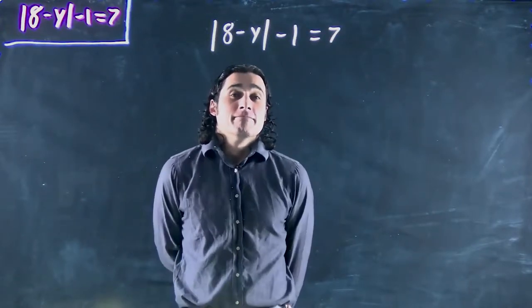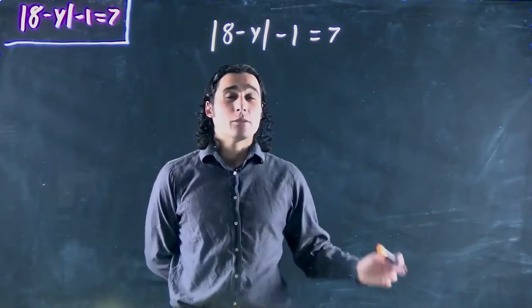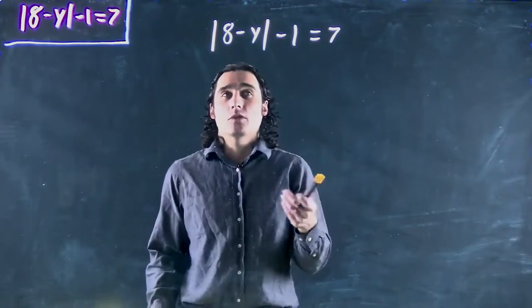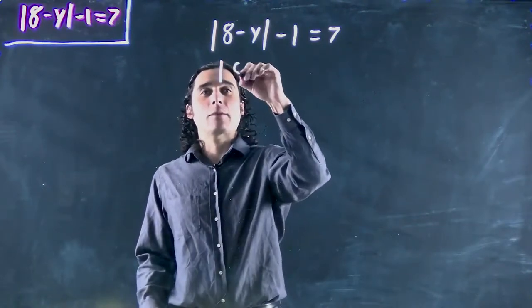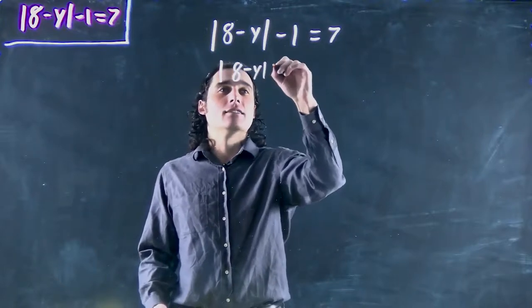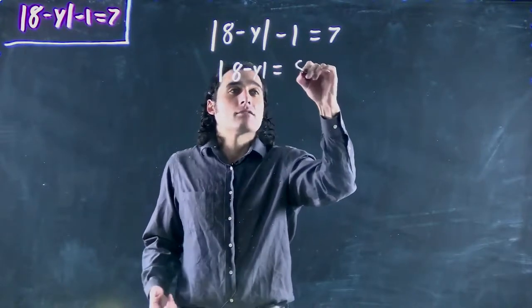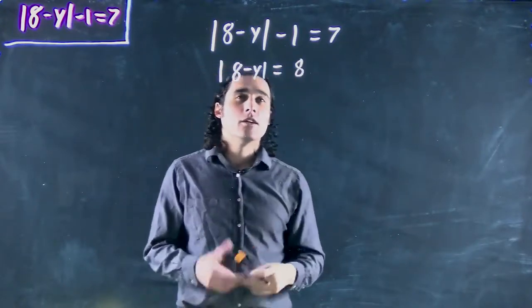Well, if we want to get rid of an absolute value, first thing we need to do is get it on its own. So first we've got to get rid of this 1. So we're going to have the absolute value of 8 minus y equals 8, because we're adding 1 to both sides. Great.